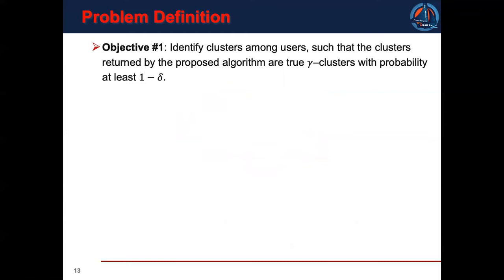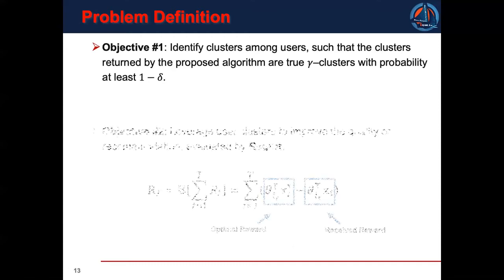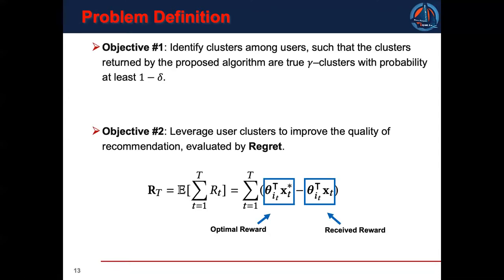So our first objective is to identify clusters among users, such that the clusters returned by the proposed algorithm are true gamma clusters with probability at least one minus delta. Our second objective is to leverage user clusters to improve the quality of recommendation, evaluated by the regret. Regret is the accumulated difference between the optimal reward and the received reward.